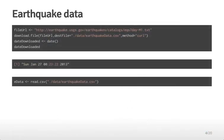We can use the download.file command we learned about in the getting data lectures, passing the file URL to download.file and saving it as earthquakedata.csv. These slides were created on Sunday January 27th, 2013, so if it's seven days beyond that you'll get a slightly different data set. Then we use read.csv to read the file, and the data is now stored in the edata variable.